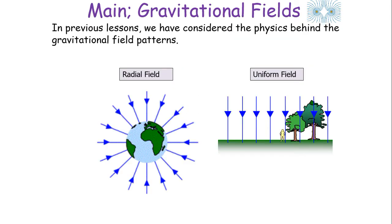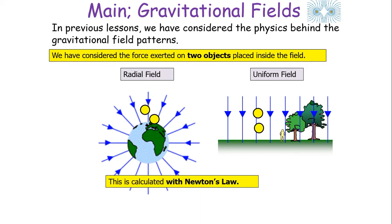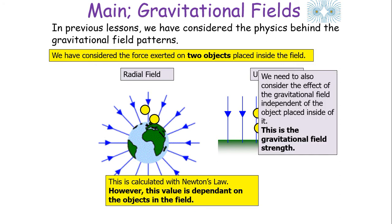In previous lessons, we've considered the physics behind gravitational field patterns and the force exerted on two objects placed inside a field, which we can calculate with Newton's law of gravitation. But this value is only dependent on the objects in the field — it's not an actual measure of the gravitational field itself. So we need to consider the effect of the gravitational field independent of any objects placed inside it.